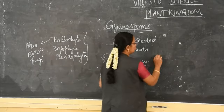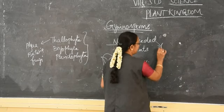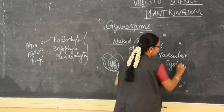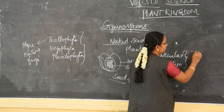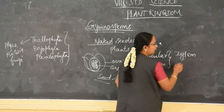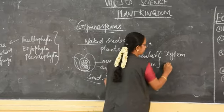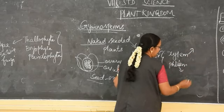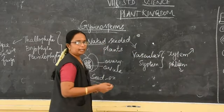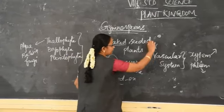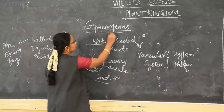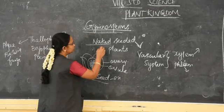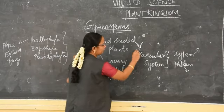Gymnosperms show some characteristics like higher plants, because in them the vascular system is present. In this vascular system, the xylem and phloem are present. This shows the higher plant characteristics. Xylem tracheids are present, and then vessels, phloem, xylem — everything is present. So as these characters are shown by them, they are considered to be higher organisms. Gymnosperms are naked seeded plants and the vascular system is present.